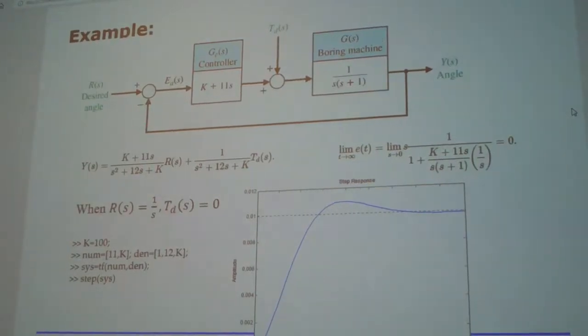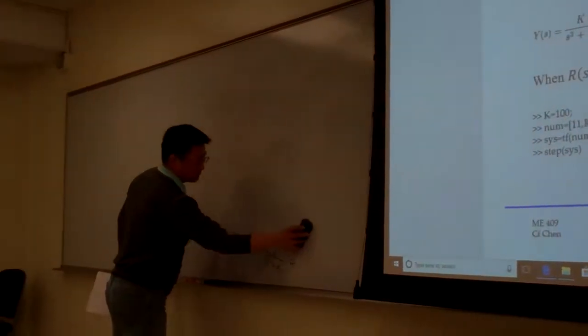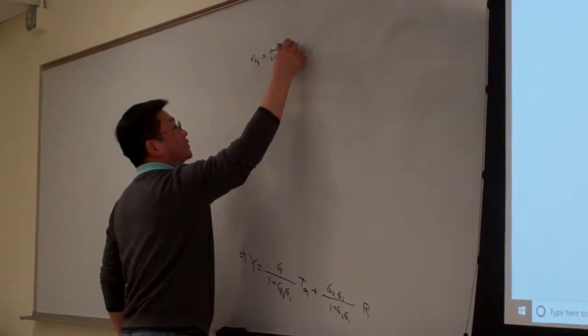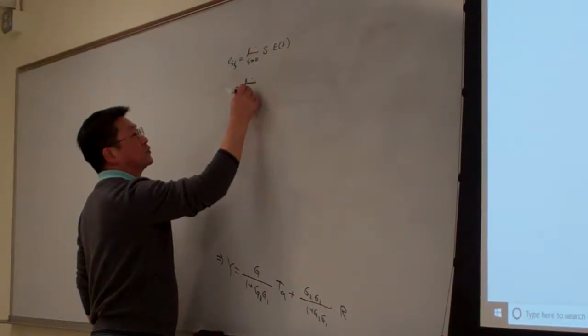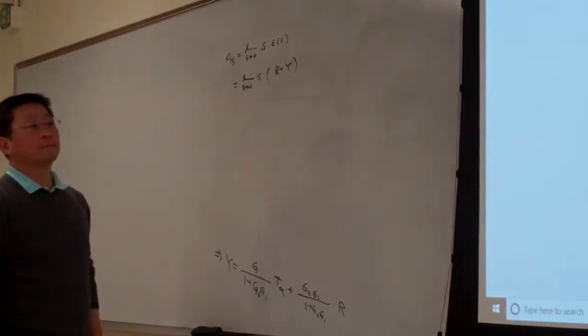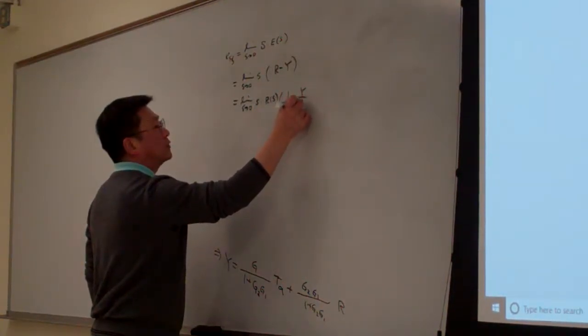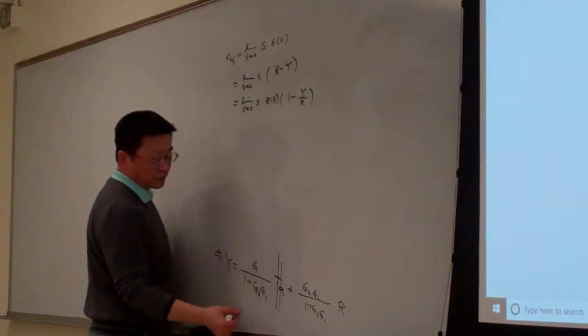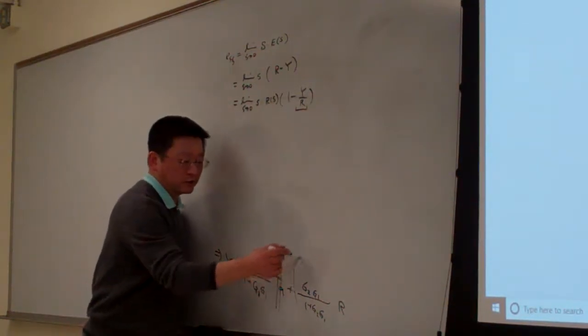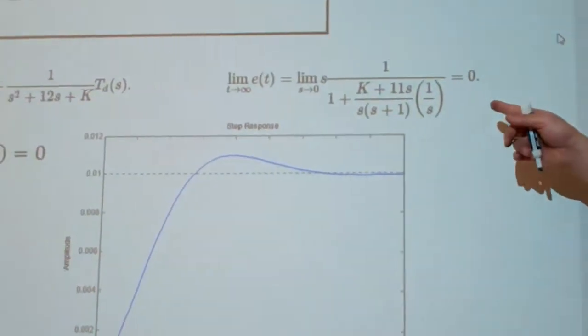The steady state error basically is ESS equal to limit as S approaching to 0, S times ES. That one basically is approaching to 0. What is E? E, by this definition, is R minus Y. So that means further we can simplify that S times R of S times 1 minus Y over R. By assuming TD equal to 0, we have a relation between Y and R. So basically, you should be able to determine this form. That is the transfer function of this term here.